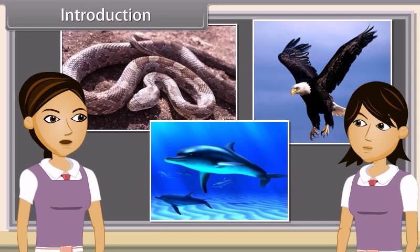Do you know how was the life on earth million and million years ago? And how did such a large variety of organisms emerge from the primitive earth? No, I don't know. Let me explain to you what happened on earth million years ago and how all the organisms — dinosaur, amoeba, plants and other animals evolved.